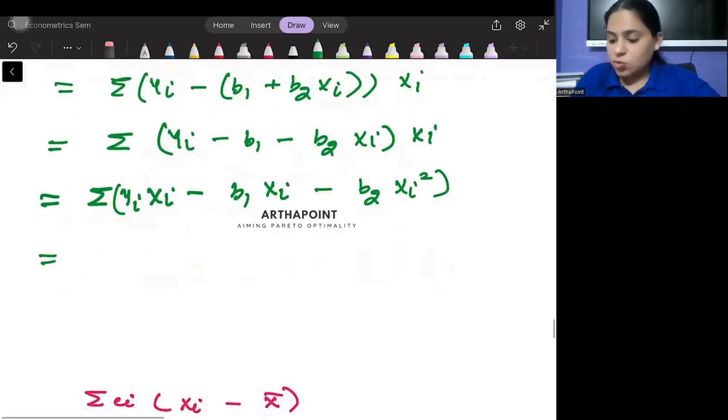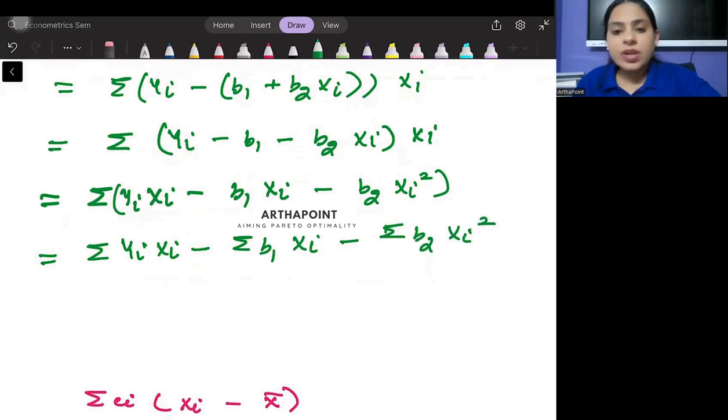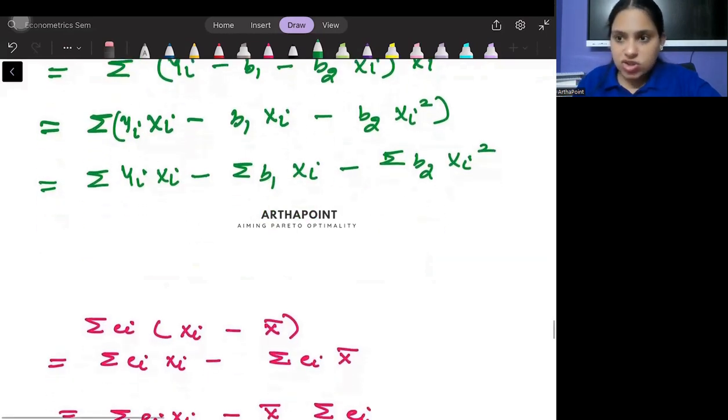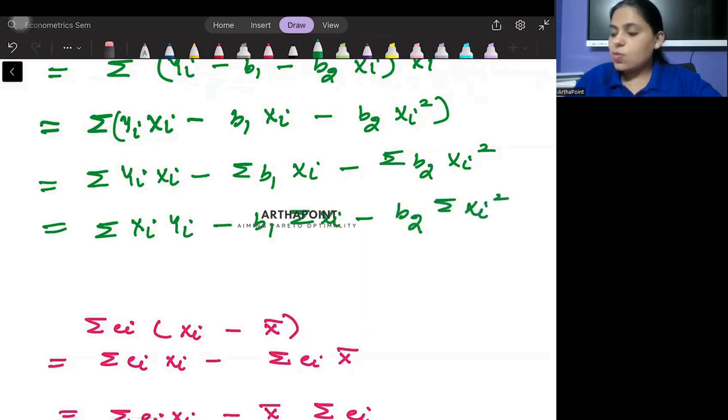Now B1 and B2 are just constants. This will be ∑Xi*Yi - B1∑Xi - B2∑Xi².